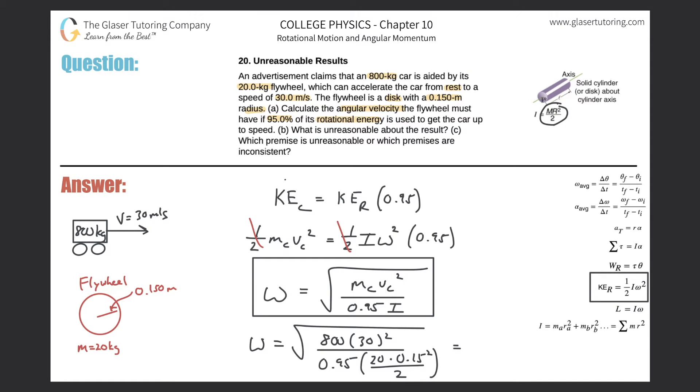Let's calculate the value: 800 times 30 squared divided by 0.95 times 20 times 0.15 squared all divided by 2, close the parenthesis, and then square root it. So omega is about 1840 radians per second. That is the angular velocity that takes care of letter A.